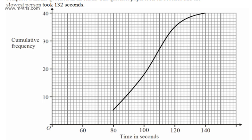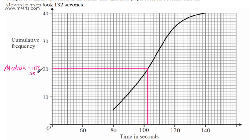To find an estimate for the median, we're going to take that reading from the 20th person — 40 divided by 2 is 20. I draw a cross and drop a perpendicular down, and that looks to be about 102 seconds. So the median — sometimes called Q2 or the second quartile — is going to be approximately 102 seconds. This gives us a central measure; the median is an average for the middle person.